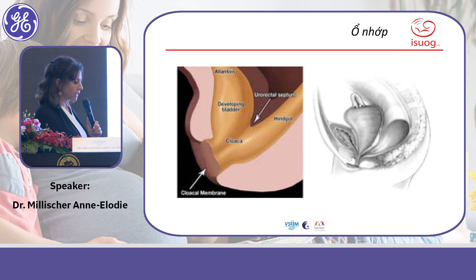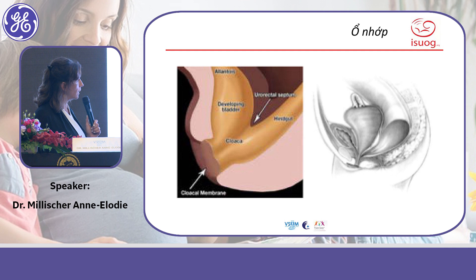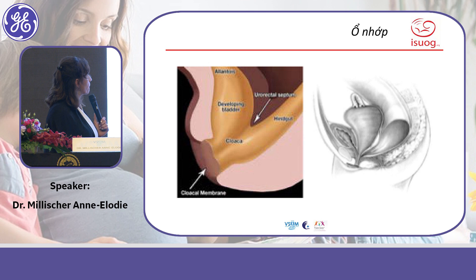Cloaca involves a common canal that is unique between three organs — the anus, genitalia, and urinary tract all drain into a single channel.